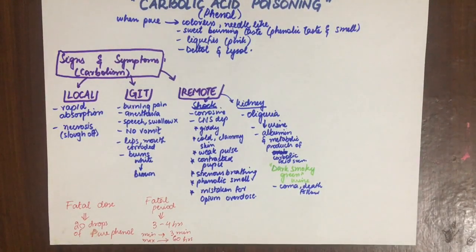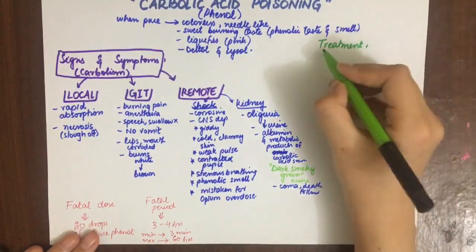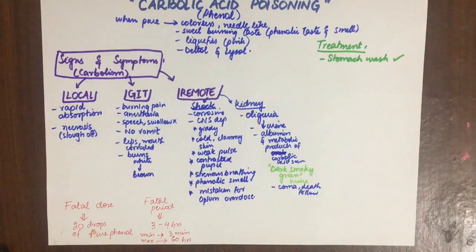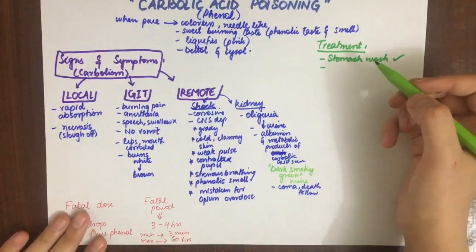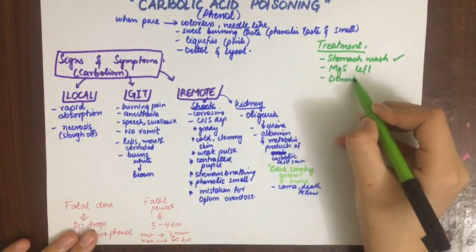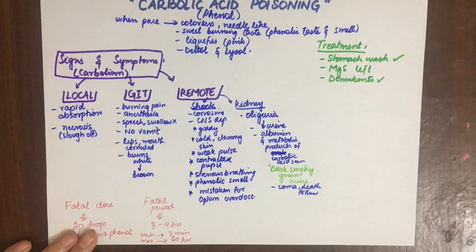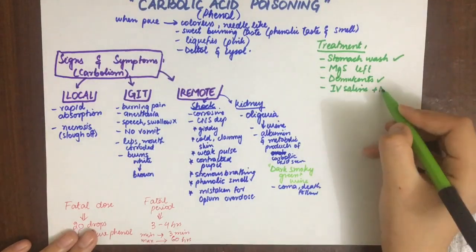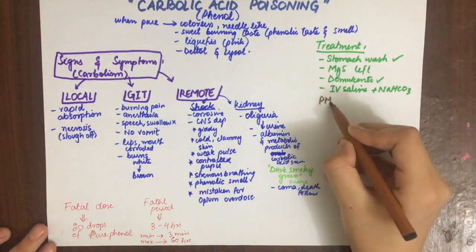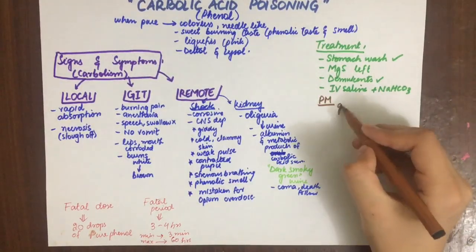In the treatment of acute carbolic acid poisoning, the degree of corrosion is not as severe as mineral acids, so a soft gastric tube is passed and gastric lavage is done using glycerin in water. Magnesium sulfate or liquid paraffin can then be left in the stomach. Demulcents are used. IV saline plus sodium bicarbonate is also used to make the urine alkaline.